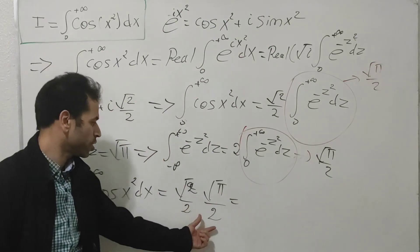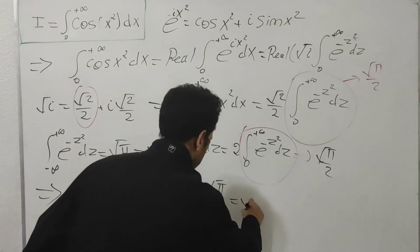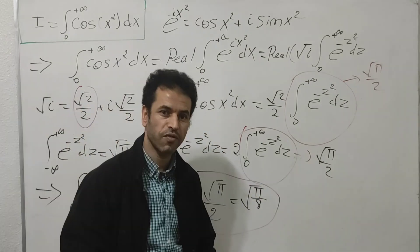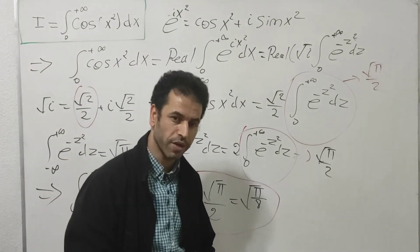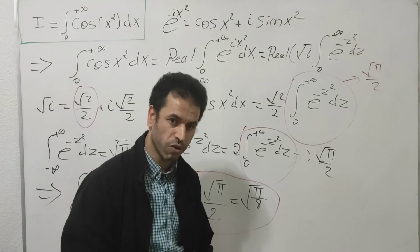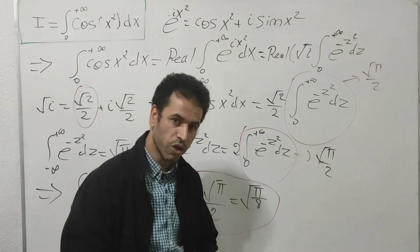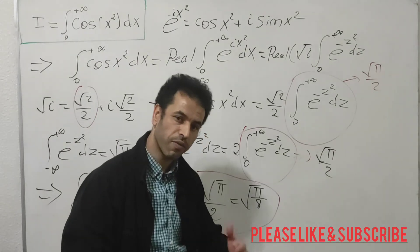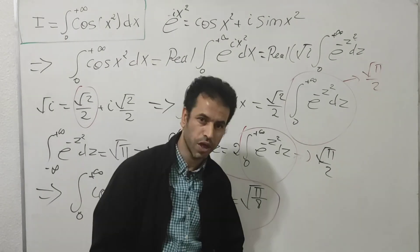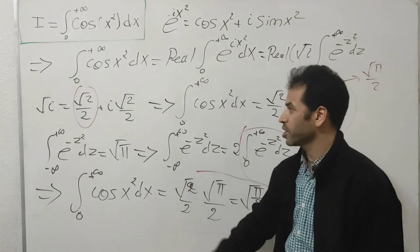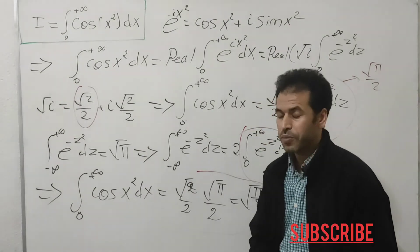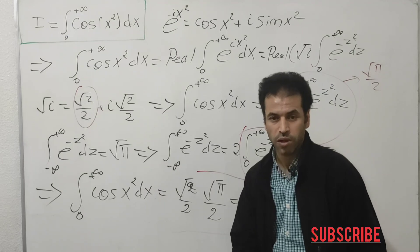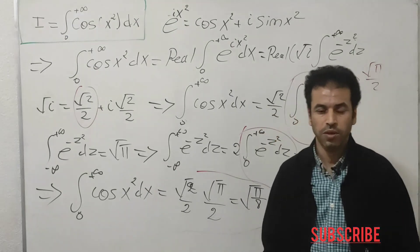Finally, the integral from zero to plus infinity of cosine(x²) dx equals √2/2 multiplied by √π/2, which simplifies to √(π/8). There are many ways to solve this integral, but I prefer the Jacobian transformation — I recommend watching that proof as it leads to the answer more quickly. Thank you for watching, see you in the next video!